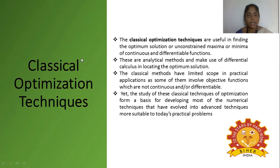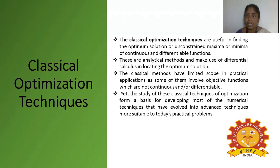The first type is the classical optimization technique. This technique is useful in finding the optimum solution — the maximum yield we are going to produce from a particular substrate. It uses continuous or differentiable functions, considering the various factors influencing the process, and determines how much maximum product we can produce from a minimum source of substrate.